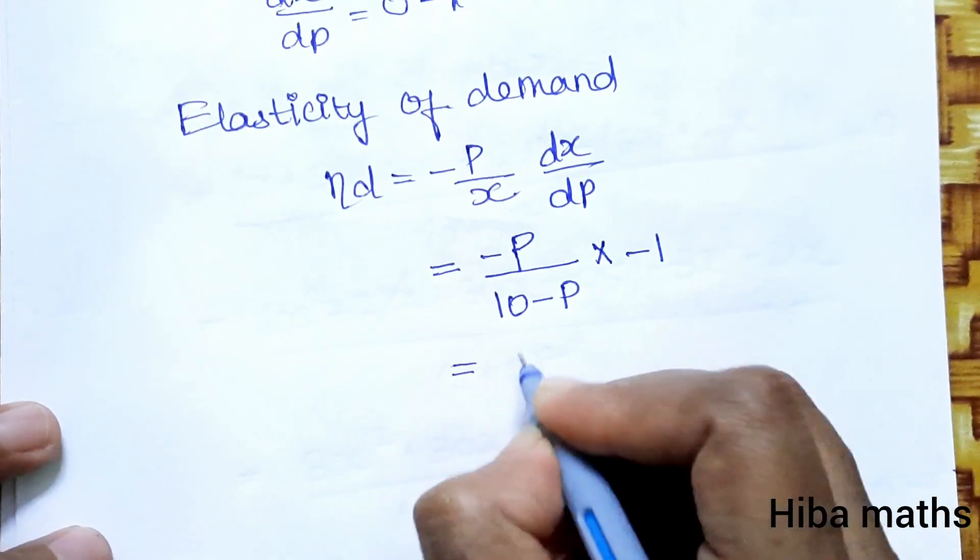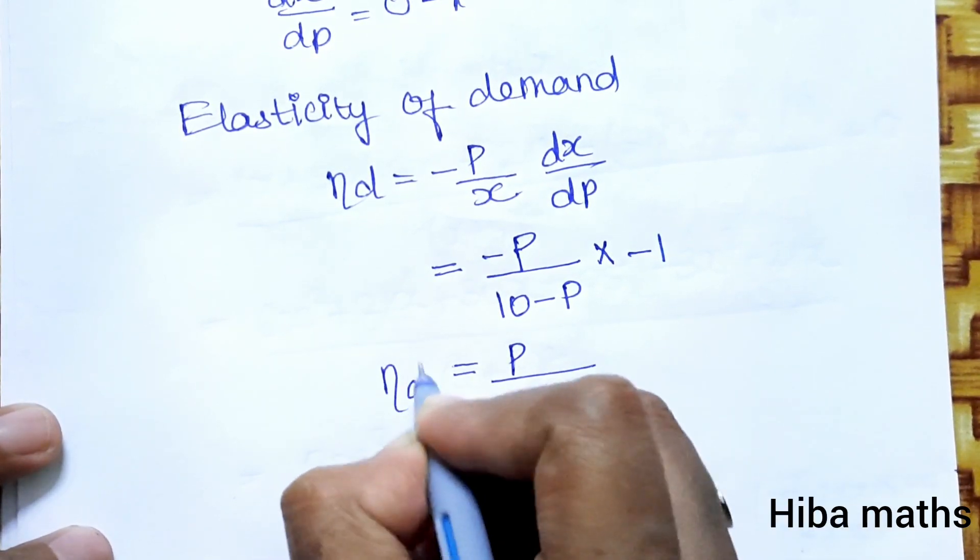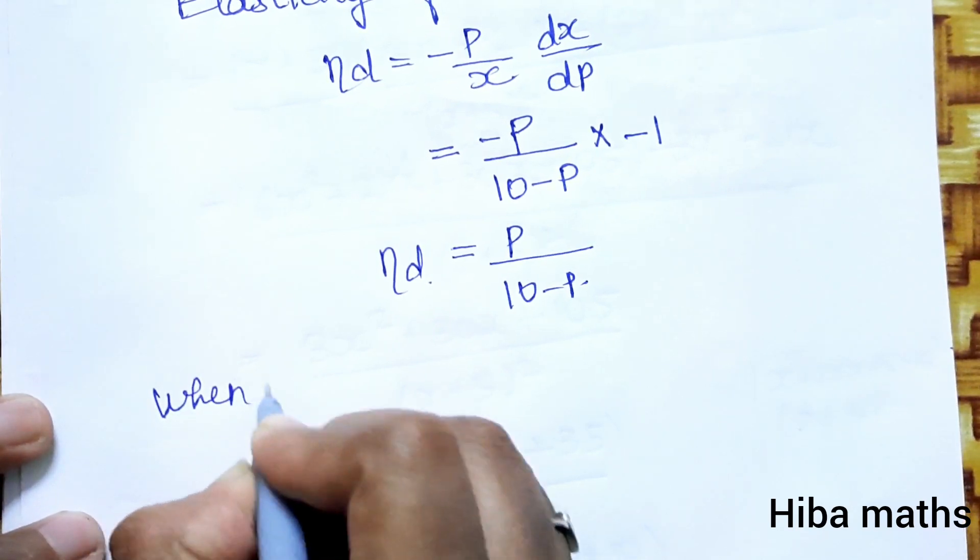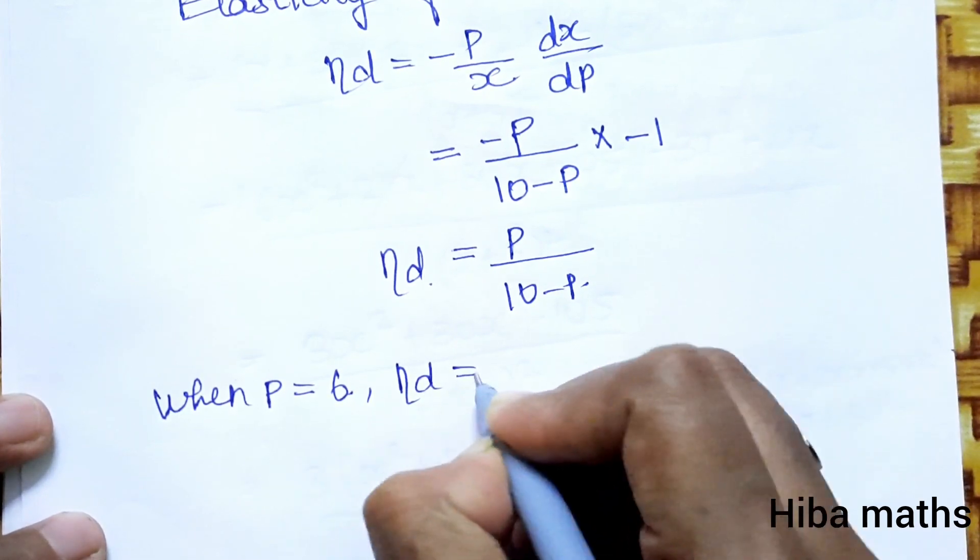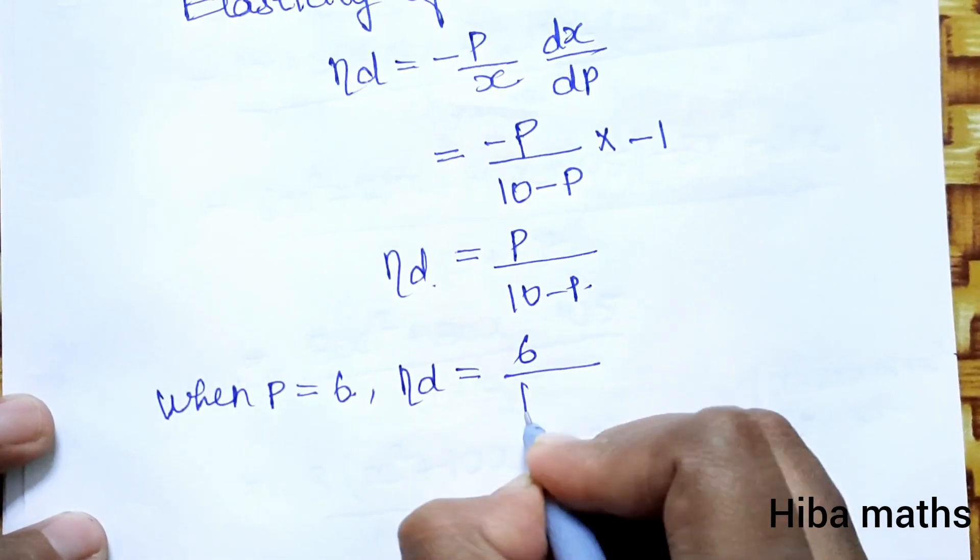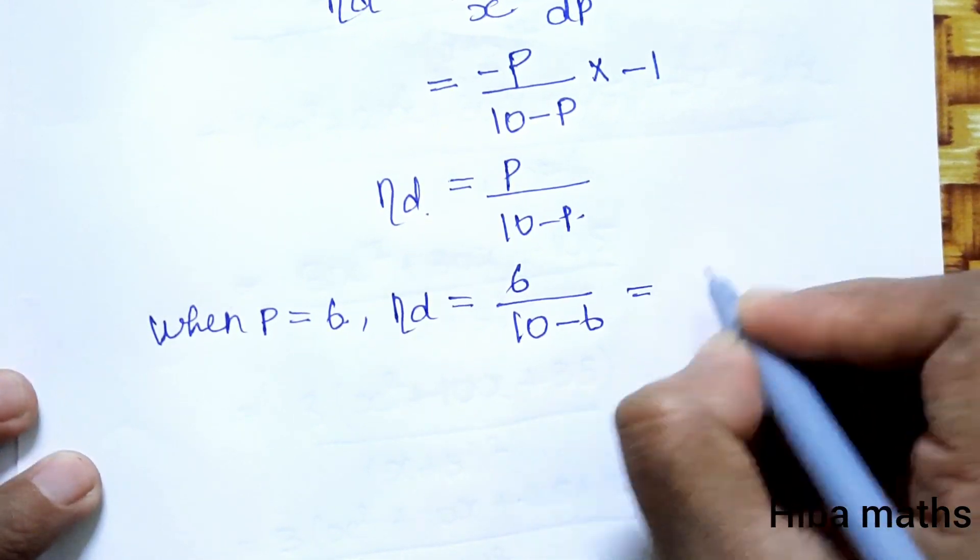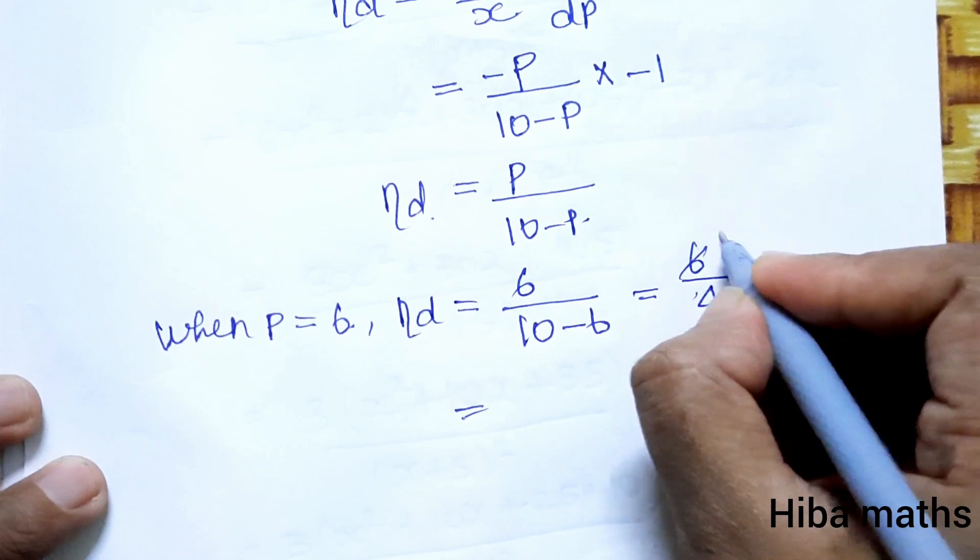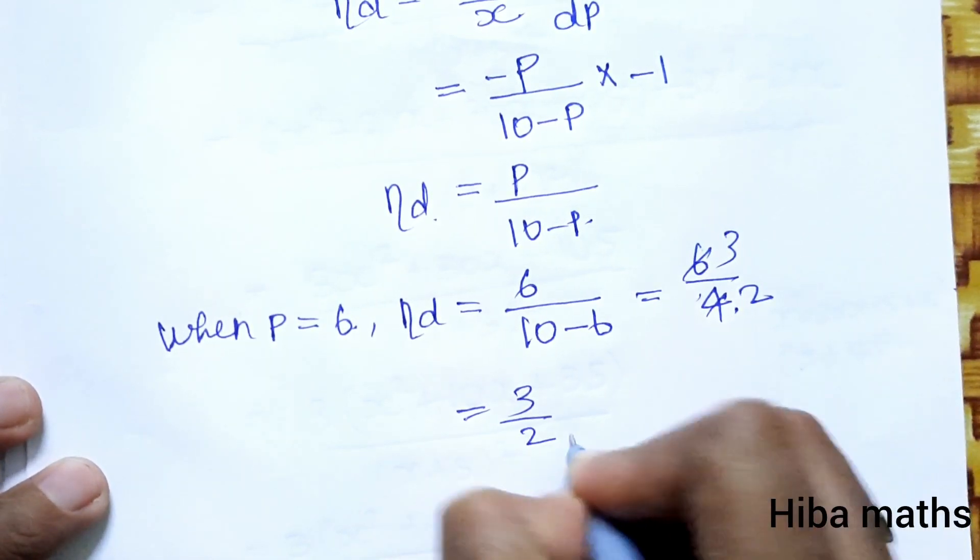So η_d = P/(10-P). When P = 6, this equals 6/(10-6) = 6/4 = 3/2.